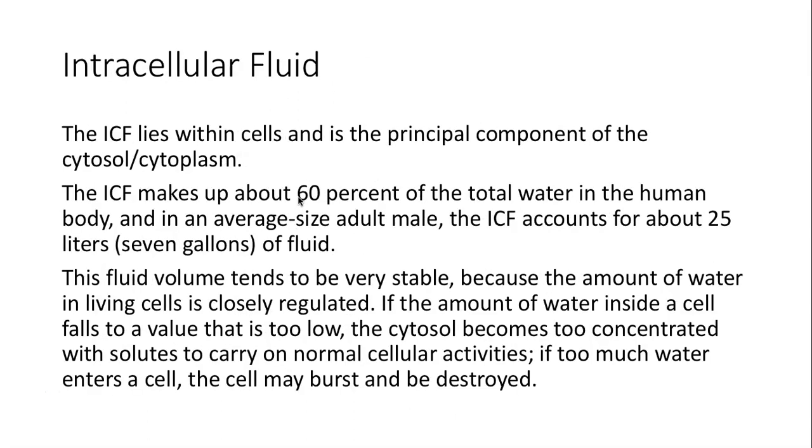First let's talk about intracellular fluid. The intracellular fluid lies within cells and it's the principal component of the cytosol and cytoplasm. The intracellular fluid makes up about 60% of the total water in the human body. So it's six out of 10, right? It's a good amount. And in an average size adult male, that might account for about 25 liters, which is seven gallons of fluid. This tends to be very stable because the amount of water in living cells is closely regulated in order for those cells to survive. And so this amount of water is basically always going to be the same. And like we just saw on the previous slides, if the amount of water inside a cell falls to a value that's too low, the cytosol will become too concentrated and it'll cease to be carrying on its normal activities. And at the same time, if there's too much water, the cell might burst and be destroyed.